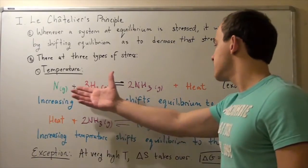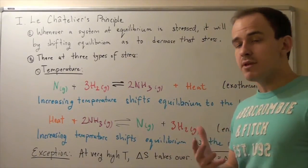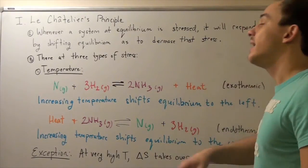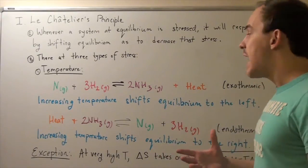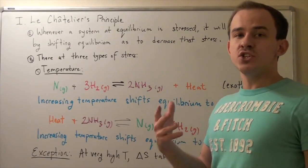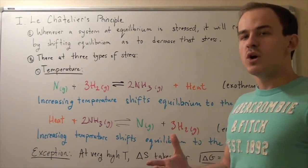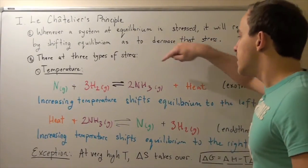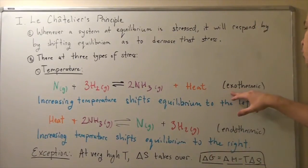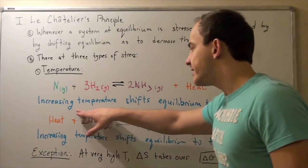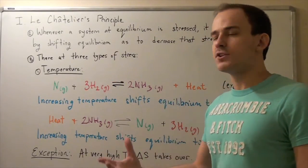Now let's increase the temperature of our reaction. We increase temperature by adding energy, which means we're adding heat. If we're adding heat, one of our products — namely the heat — increases. You could think of it as the concentration of heat increasing. If you think of this as the reaction quotient, our ratio will increase, so Q will become greater than K. That means there will be a leftward shift of equilibrium — the products will tend to convert back to reactants. So for an exothermic reaction, increasing temperature shifts equilibrium to the left, making the reverse reaction more favored.